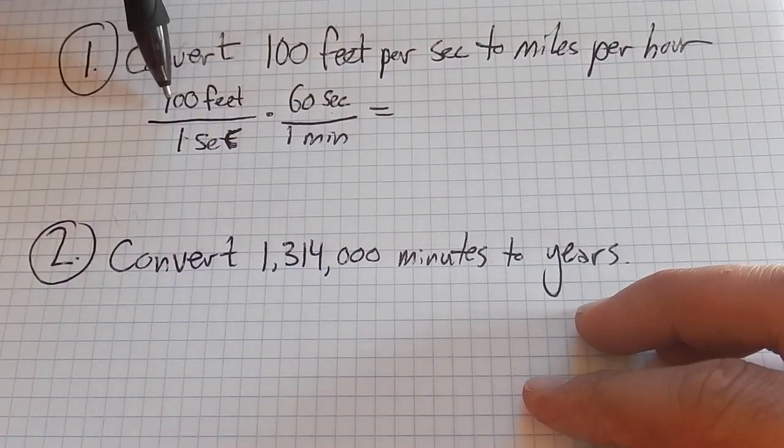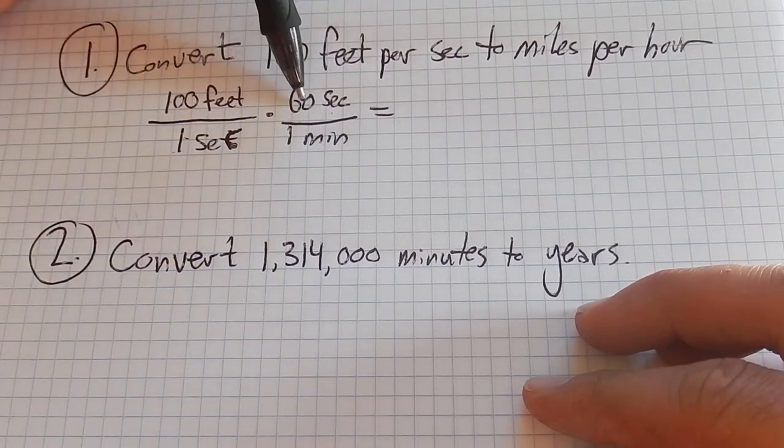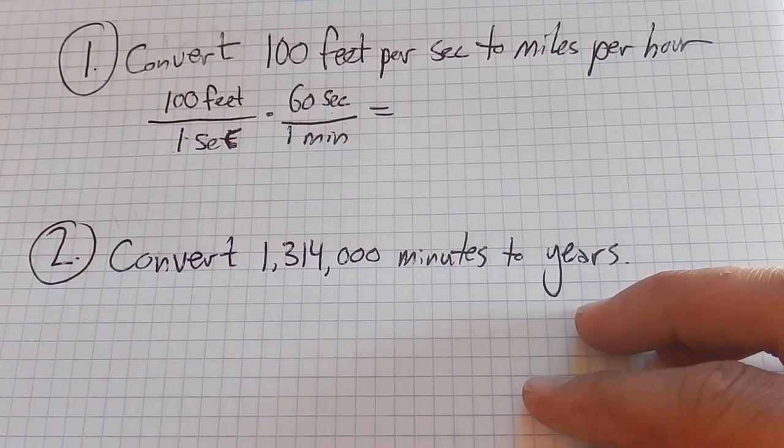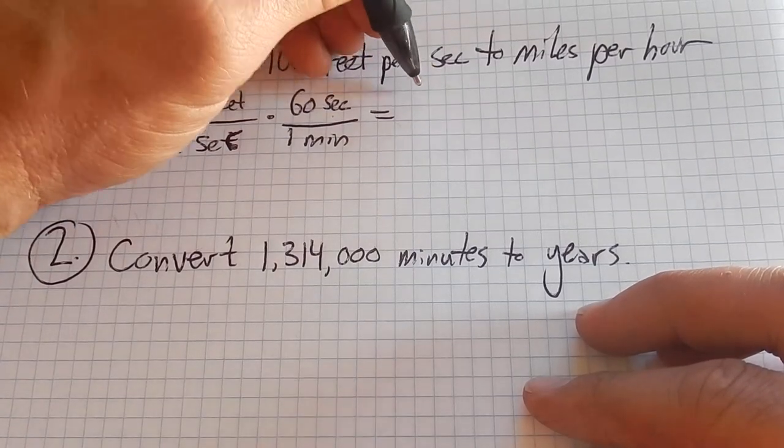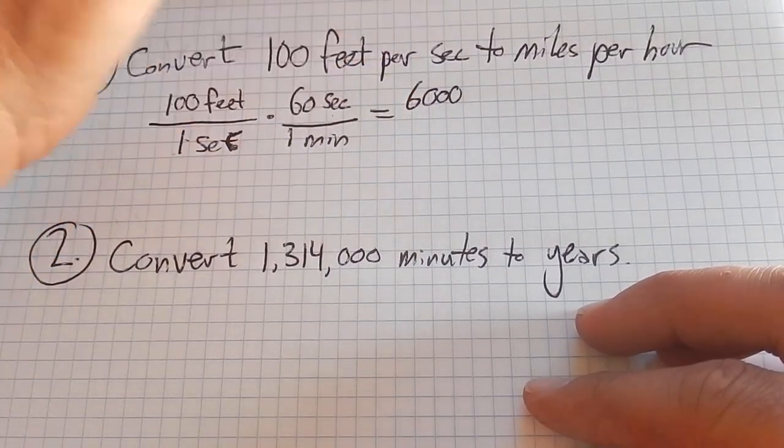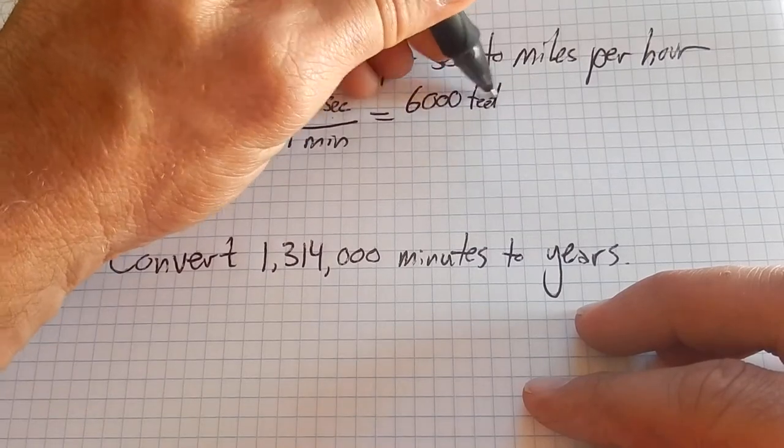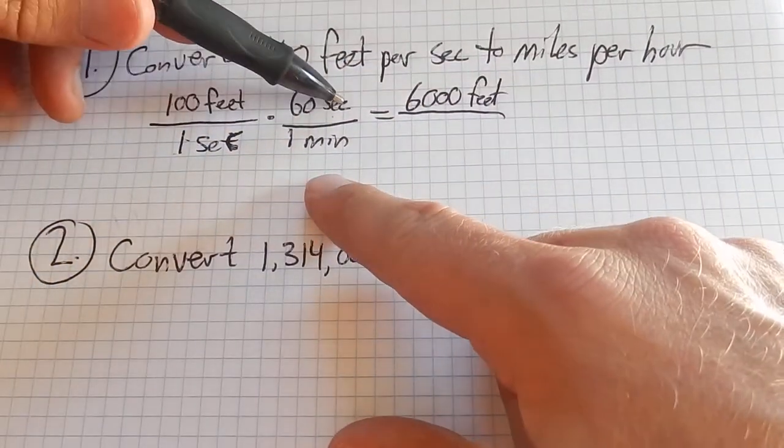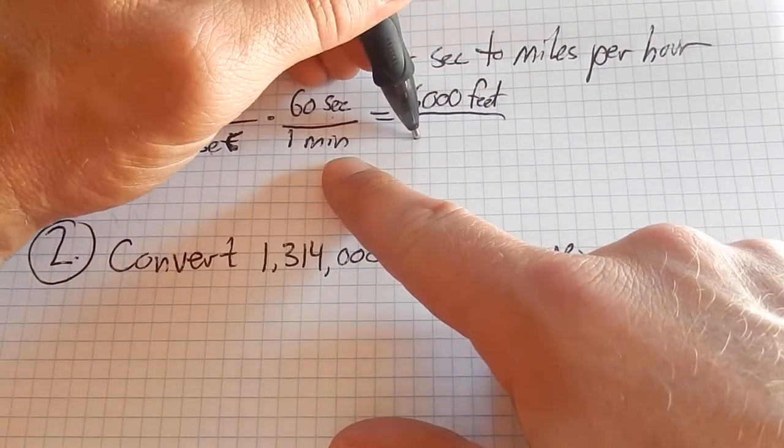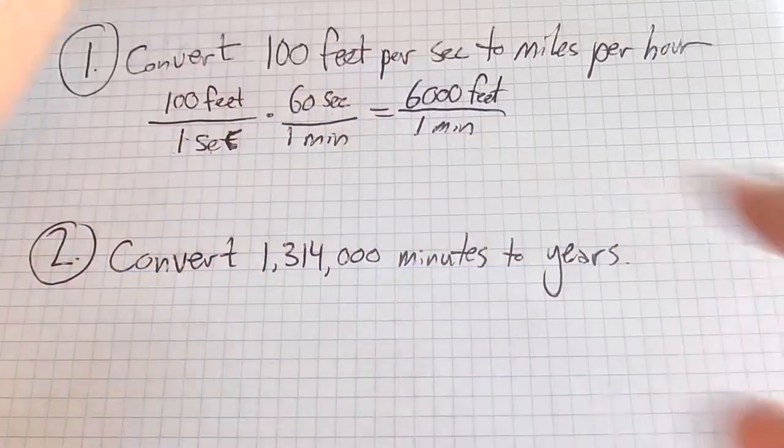Another way to think about this is if I go 100 feet in 1 second, in 60 seconds I'll go 60 times 100. So that's 6,000 feet. Notice that seconds is gone, so that's now in 1 minute.